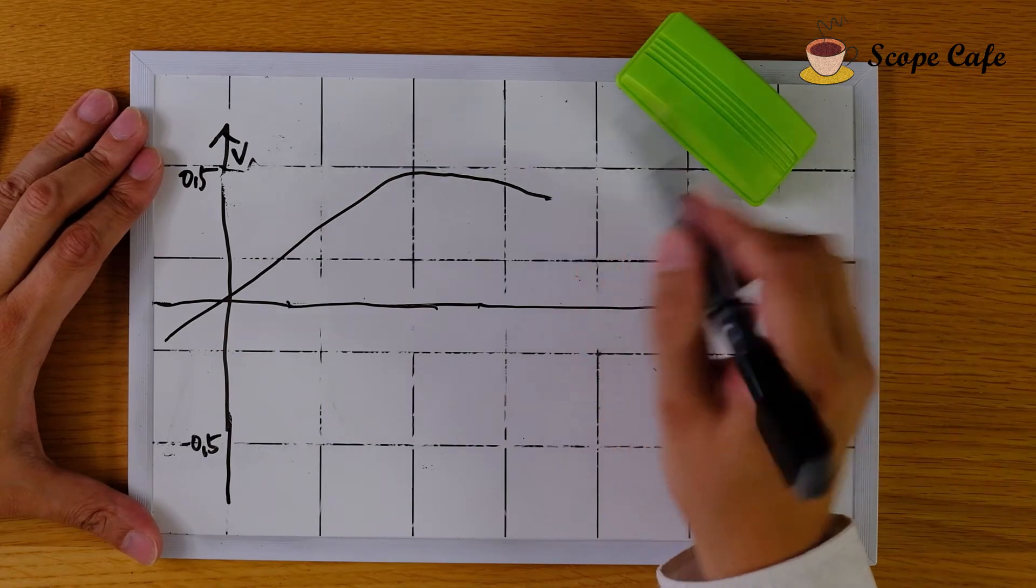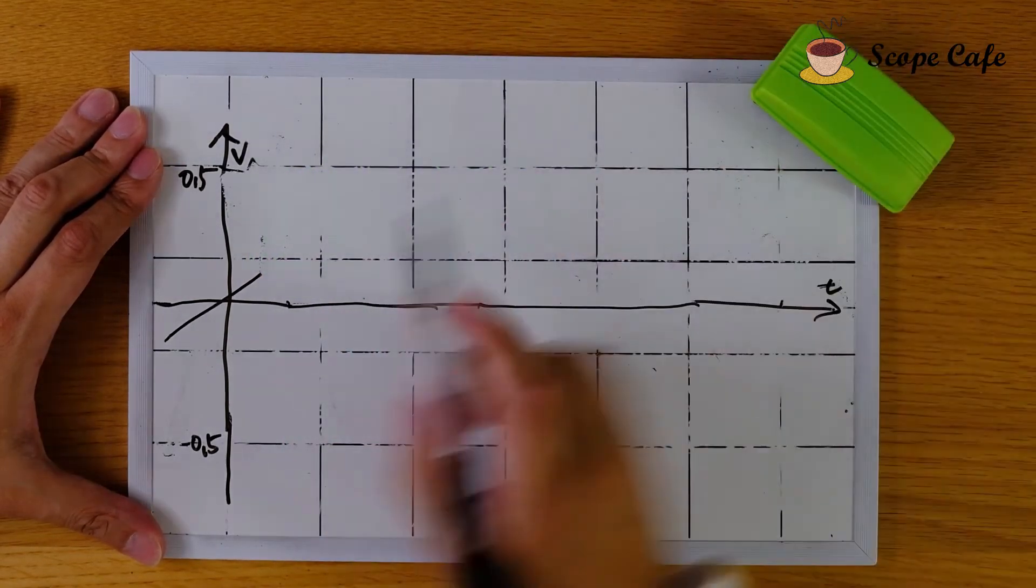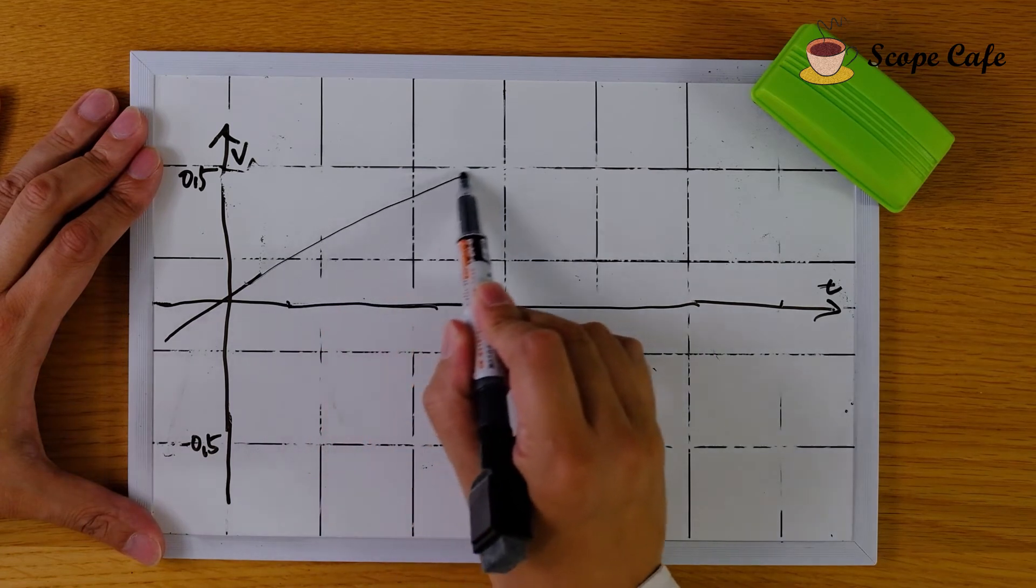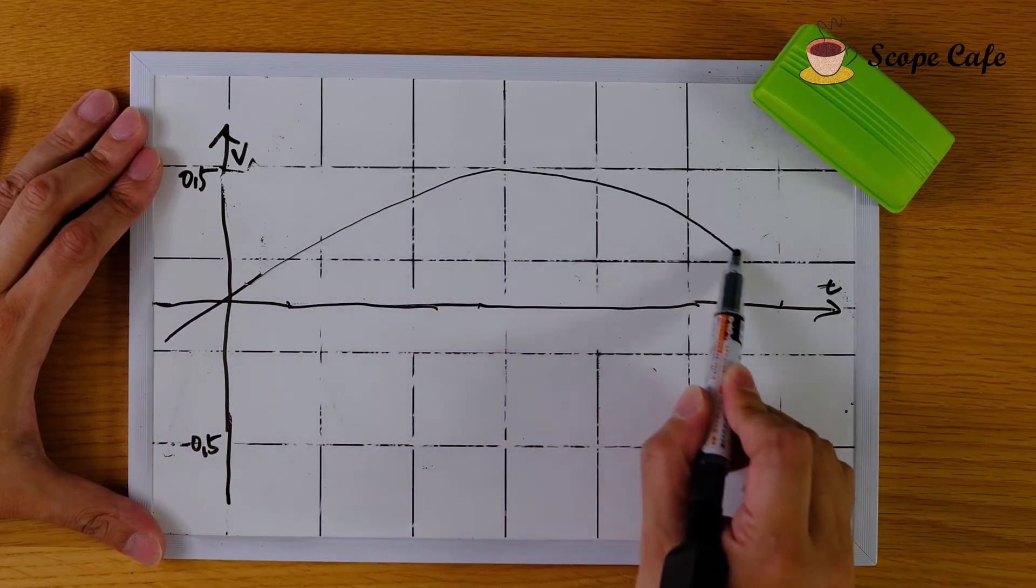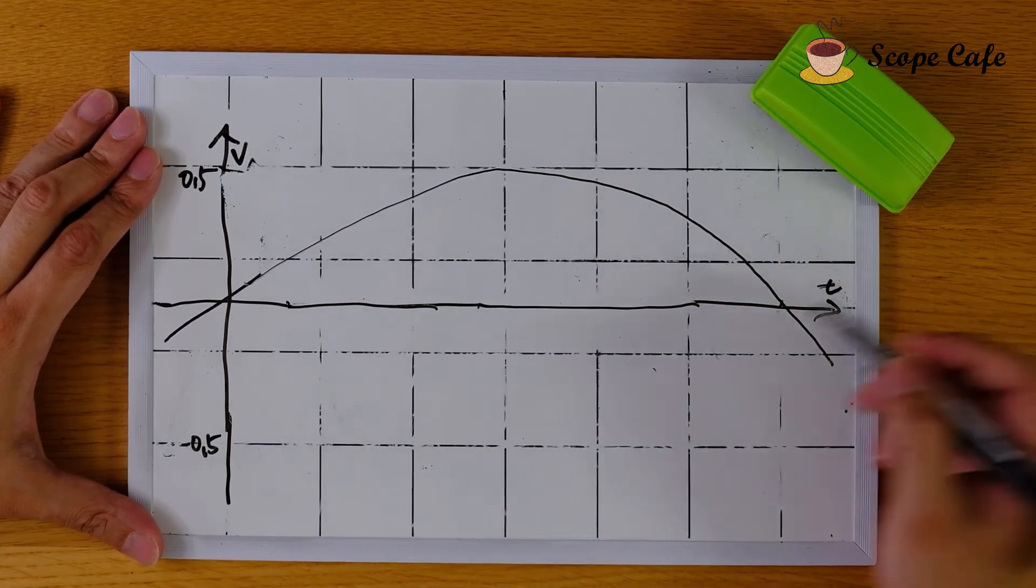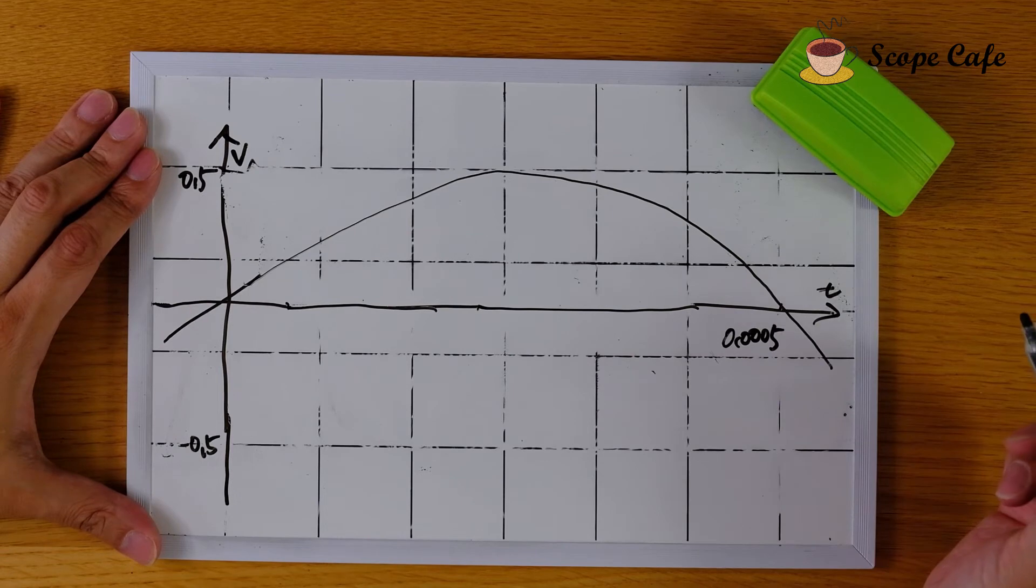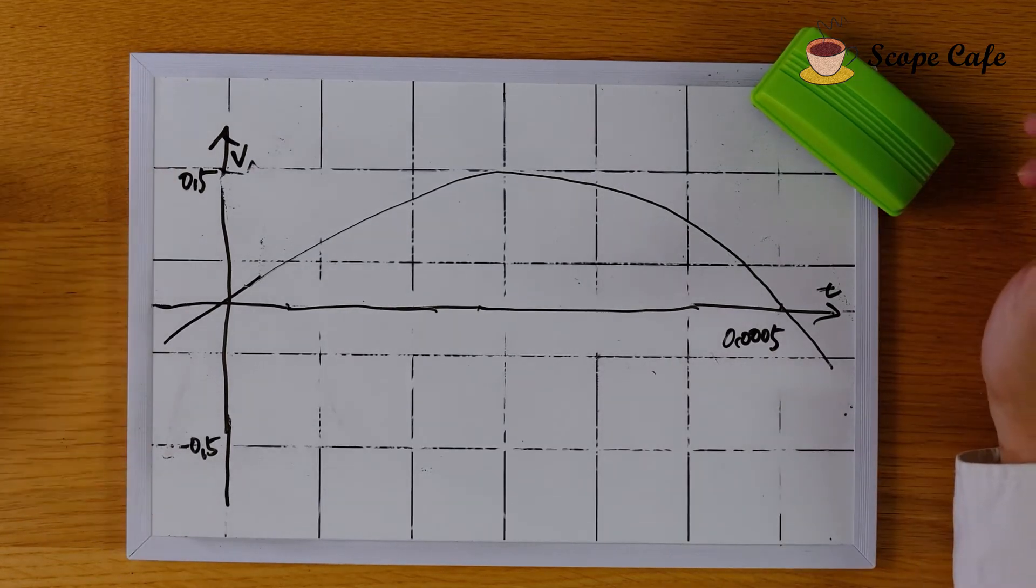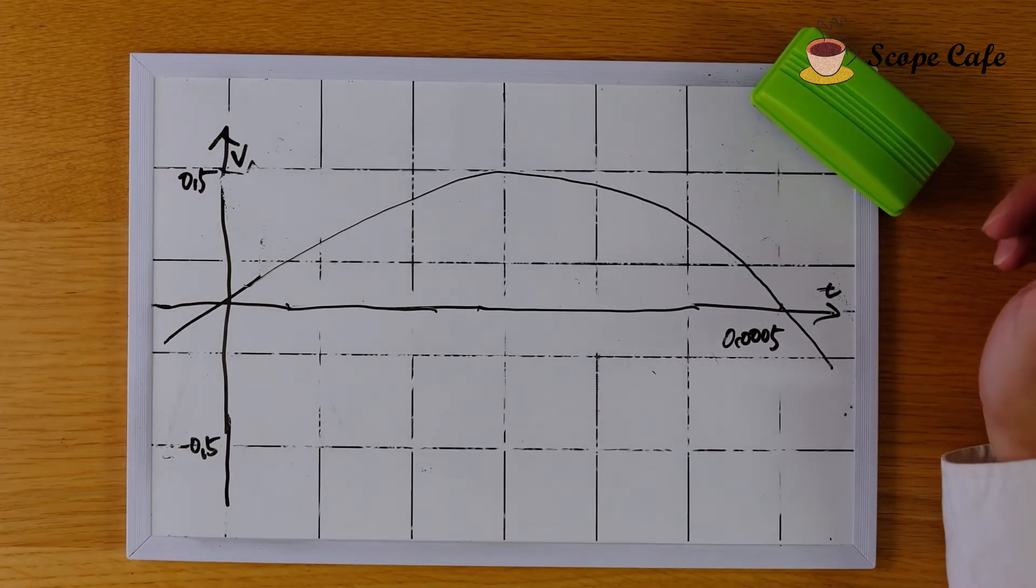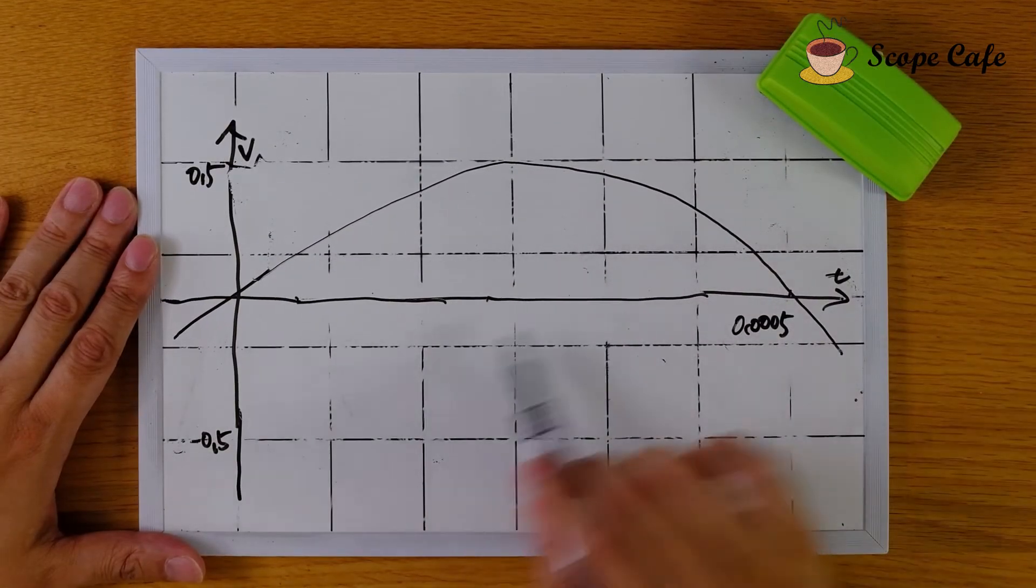and writing less than one period is also a correct answer. Oh, too much distortion. Okay, like this graph with a half period,